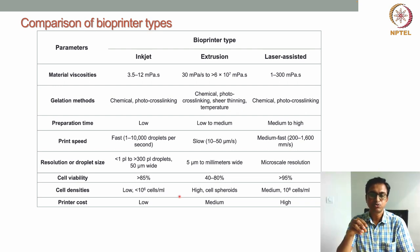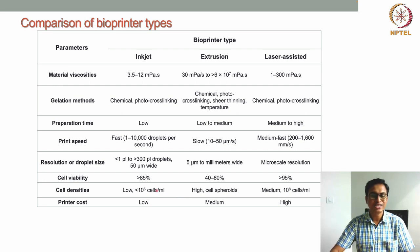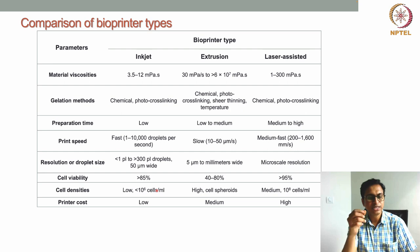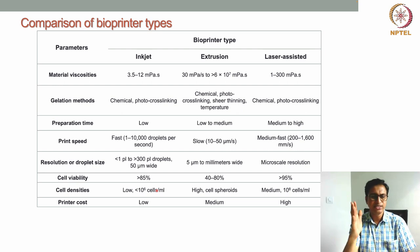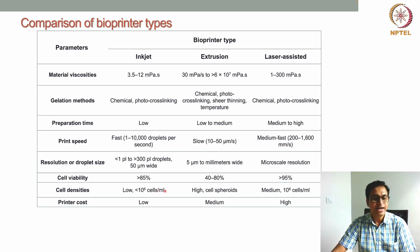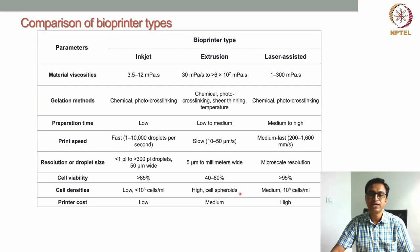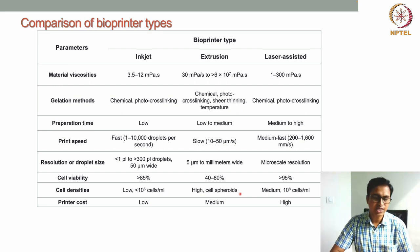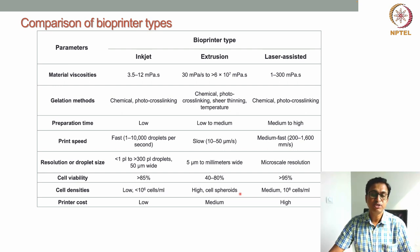Regarding cell density in the bioink: in case of inkjet, cell density cannot be very high — around 10 million cells per ml can be used. This is because the nozzle used for droplet generation can get clogged if cell density is too high, and cells can settle and clog the nozzle. For extrusion-based bioprinting, very high cell density can be used because cells are encapsulated in hydrogel biomaterials, and with homogeneous dispersion there is not much problem of nozzle clogging.